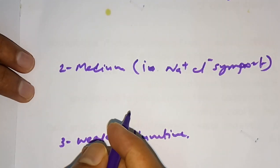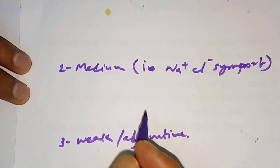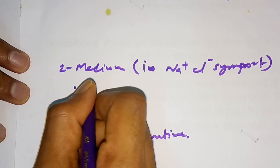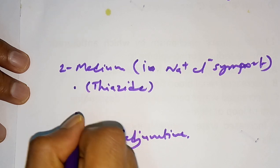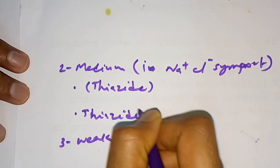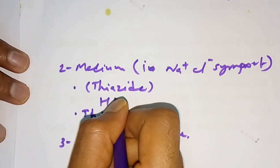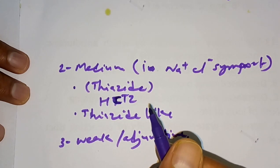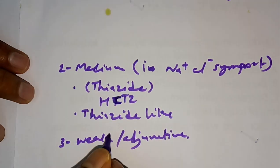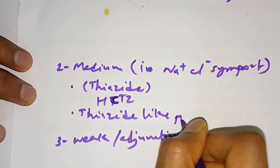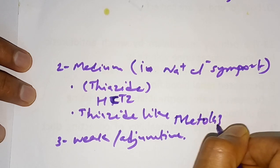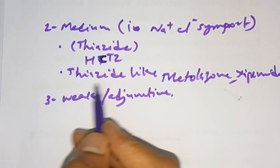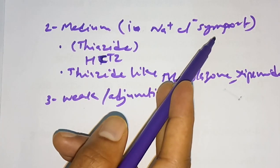Medium-efficacy diuretics are inhibitors of the sodium-chloride symporter. They are classified into two types: benzothiadiazines (thiazides) and thiazide-like diuretics. Examples of thiazides include hydrochlorothiazide and chloropamide. Thiazide-like diuretics include metolazone and cipamide. Both thiazides and thiazide-like diuretics act through sodium-chloride symporter inhibition.